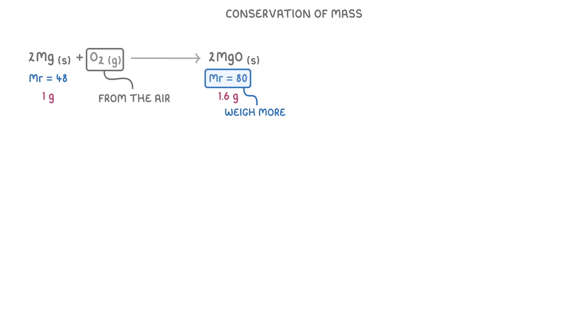So if the oxygen was just coming from the air around us, it would appear as if our product weighed more than our reactants. But really, our scales just didn't weigh all of the reactants because they didn't take into account the oxygen.